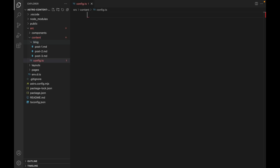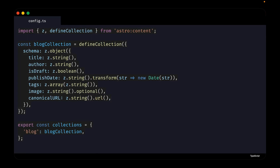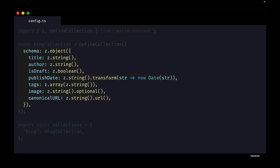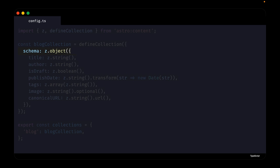Next, I'm going to paste in the entire contents of this file and then walk you through it line by line. First, we are importing the z object and the defineCollection function from astro:content. The z object is the Zod library and the defineCollection function is a special function provided by Astro, which allows us to configure a content collection. Next, we create a constant called blog collection and set it equal to the defineCollection function. We are passing the defineCollection function an object that contains our schema.